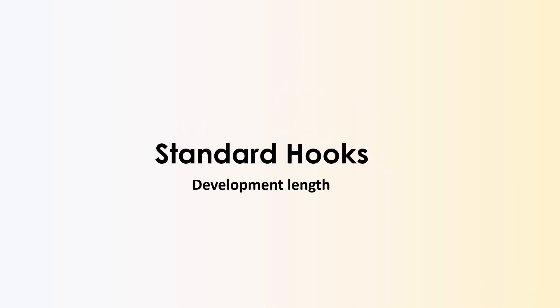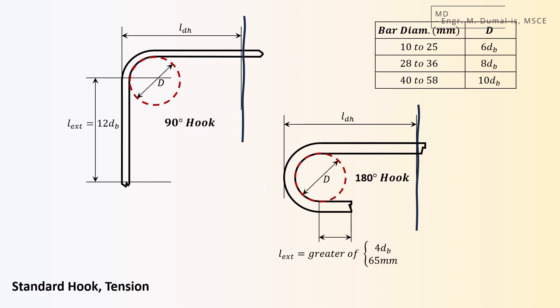Now, hook development length is quite similar with tension and compression, but for hooks, we'll have to account for additional values such as bend length and extension length. The code provided us with a separate provision for tension main bars and secondary bars. For the standard hook used for the tension main reinforcement, two provisions must be considered: 90 and 180 degrees hook.